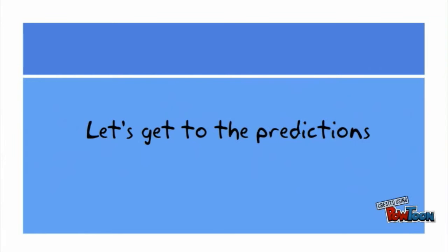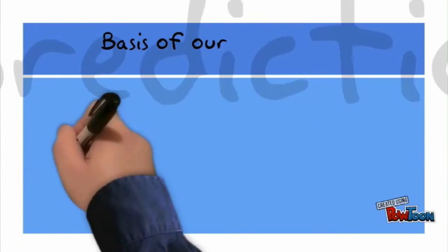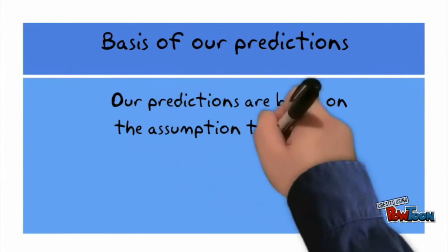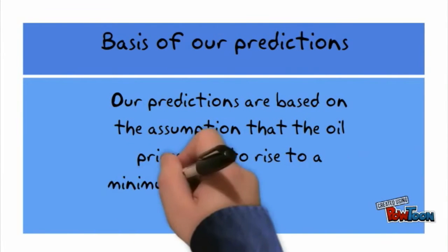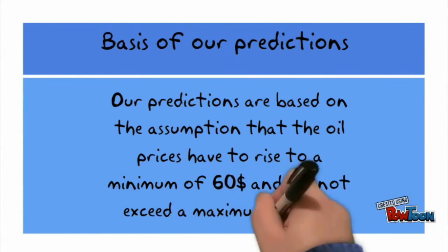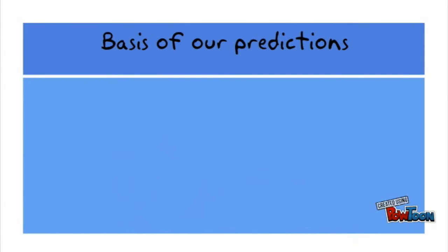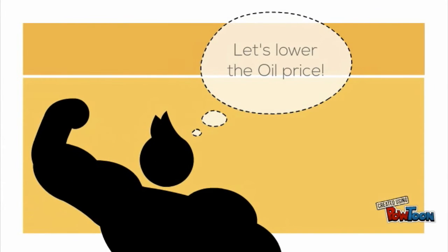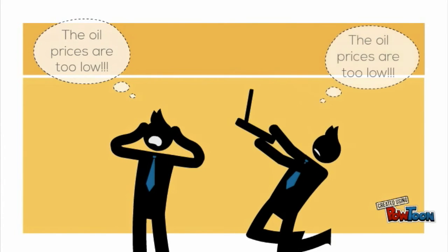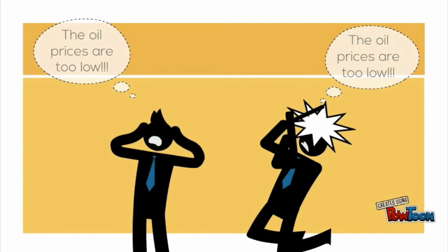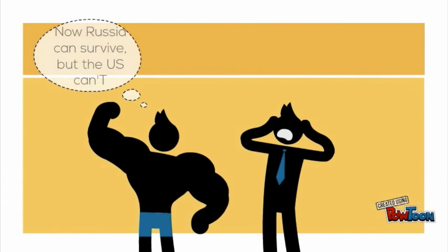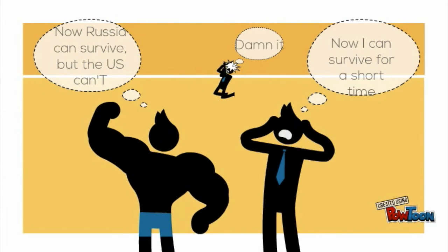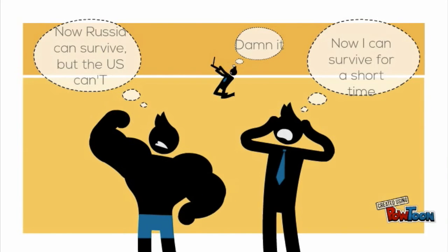Now let's get to the predictions. The basis of our prediction is the assumption that oil prices have to rise to a minimum of $60 and cannot exceed a maximum of $73. Currently Saudi Arabia is fighting for America's dependence on Middle East oil and to do so they have lowered the price. However, they did not consider that Russia might not be able to produce at this price. So with Russia out of the picture, supply would decrease, so the price would increase, making fracking a viable alternative again.